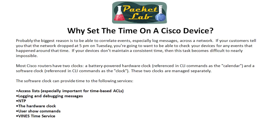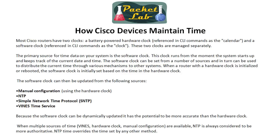The two clocks are managed separately, so you could have different times on each. The primary source for time on your device is going to be your software clock, which runs from the moment the device starts up and keeps track of the current date and time. There are a few different ways to set the software clock. There is a lesson out there for manually setting it — you'll want to check that out before getting into NTP to see the differences and why NTP is so nice.